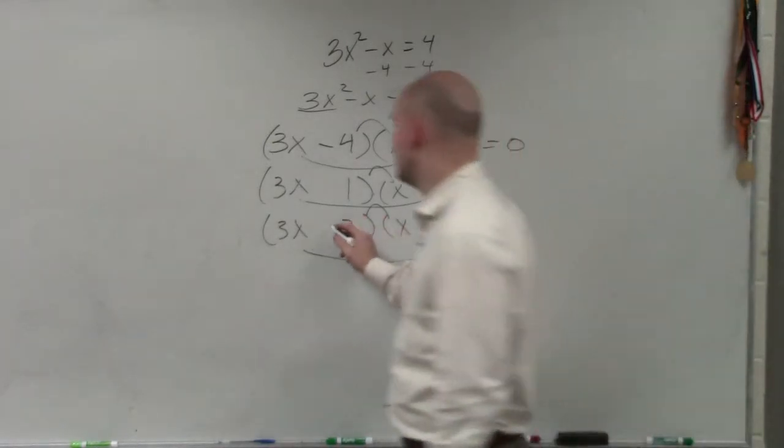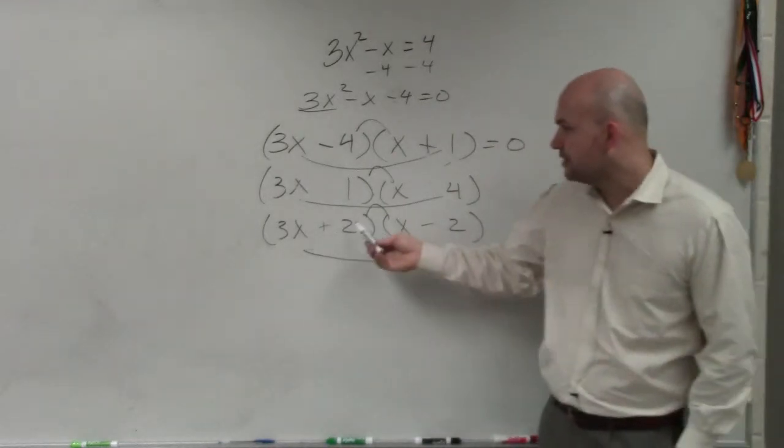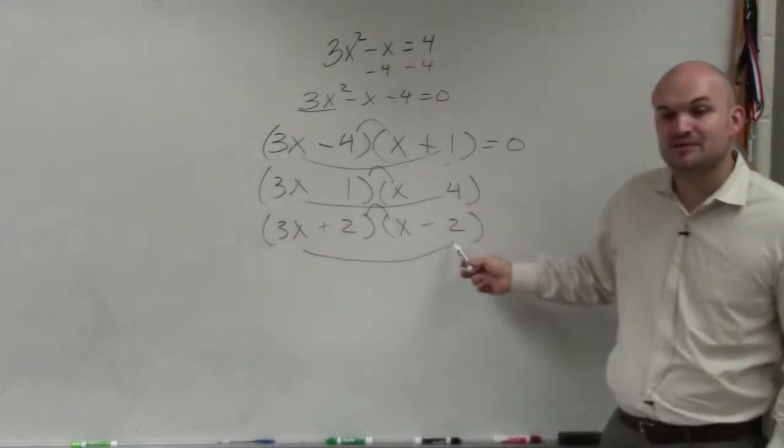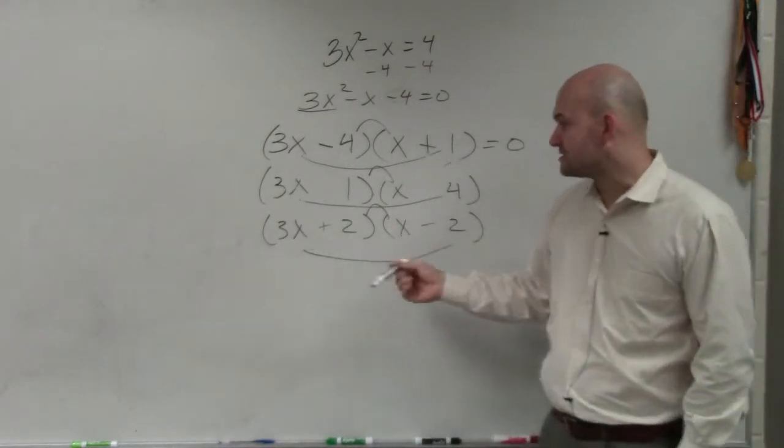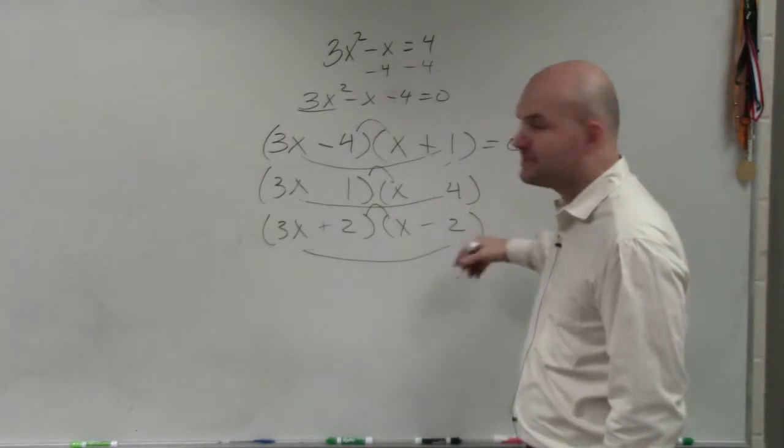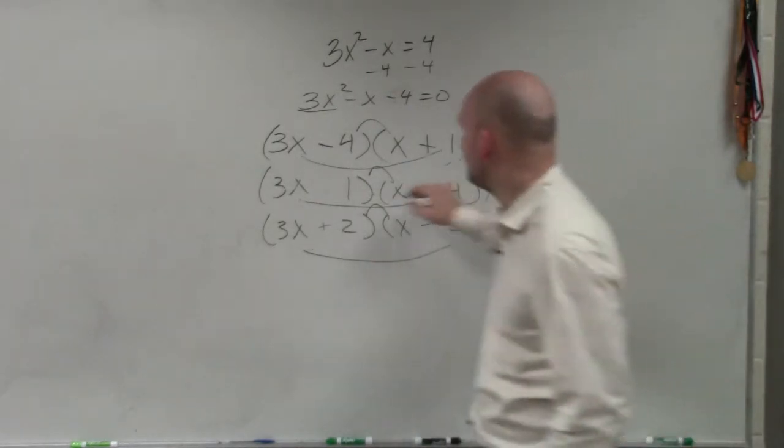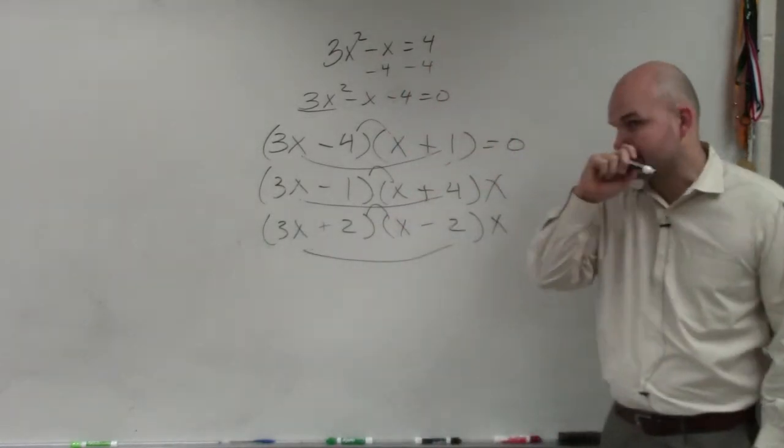Now, obviously, if you look at this, what if I did this one, plus and negative? And you guys can see why this one doesn't work. 2 times x is 2x. 3x times negative 2 is negative 6x. Negative 6x plus 2x is negative 4x. So even if you swap them around, it's not going to work. Even if you swap these around, even if you put a plus and a negative, it doesn't matter. You're not going to get the right answer.